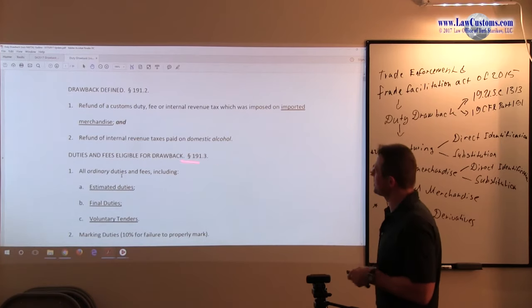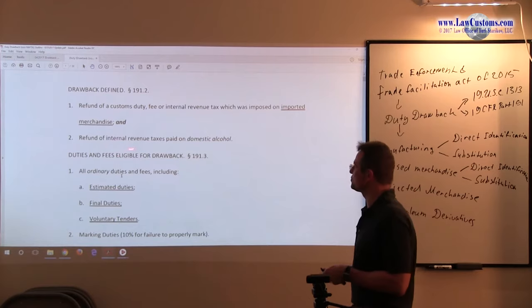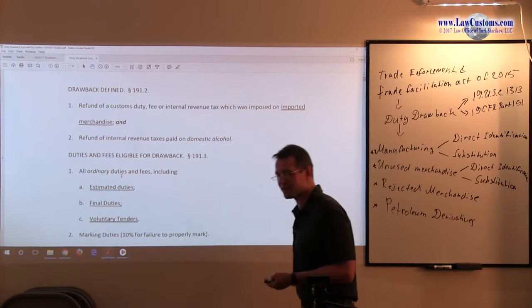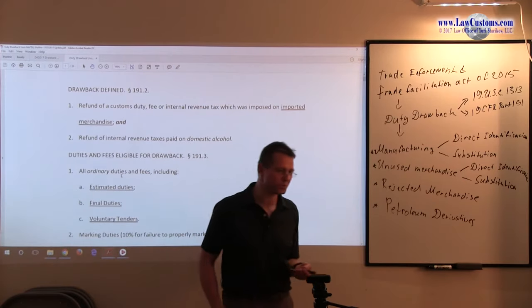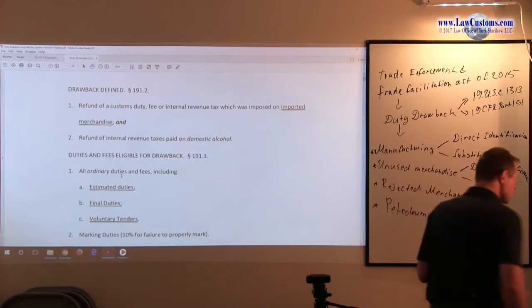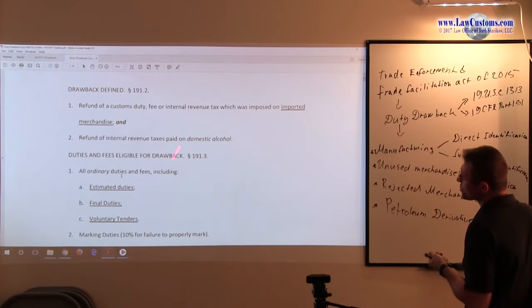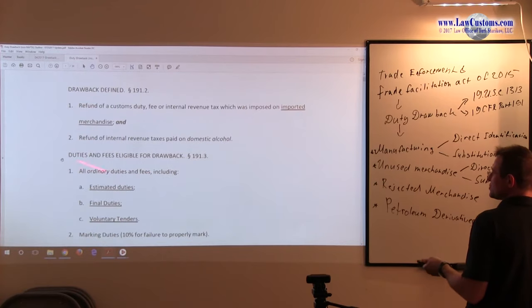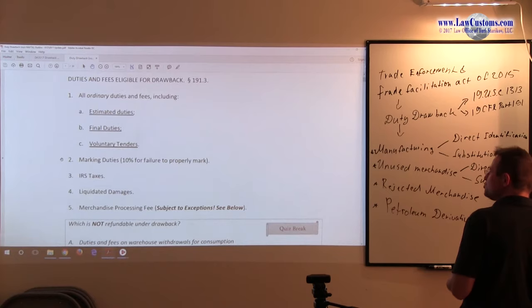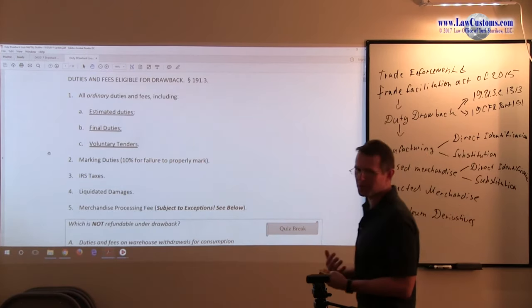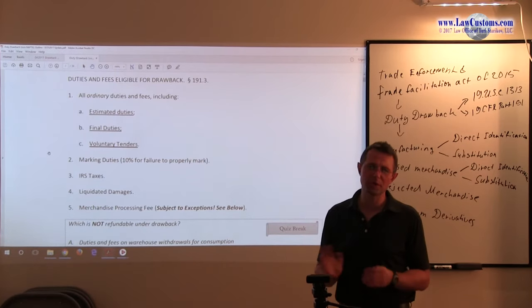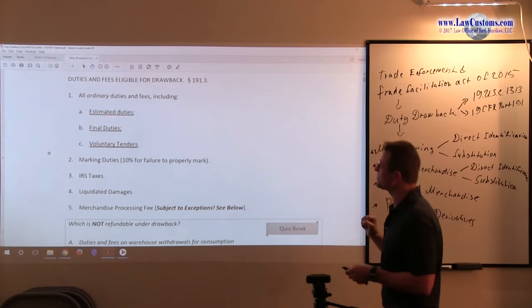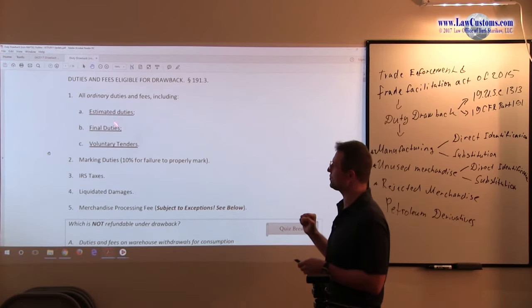And there is refund of internal revenue taxes paid on domestic alcohol. Those excise taxes which must be paid on the production of distilled spirits, if you bring them out, you can get the refund claim. Although this alcohol taxation stuff, customs examiners are not huge on testing you on this. They are mostly testing you on the first point. Alright, so what duties and fees are eligible for refund? As I mentioned, most of them, pretty much all of them are eligible. There are few minor caveats which we shall see. So all ordinary duties and fees, which includes estimated duties, final duties, and voluntary tenders.